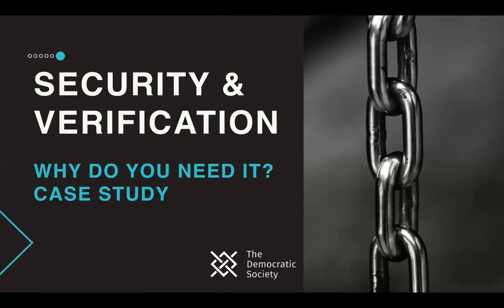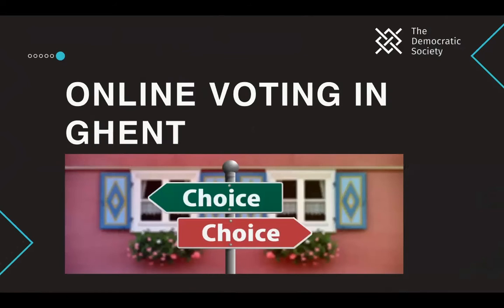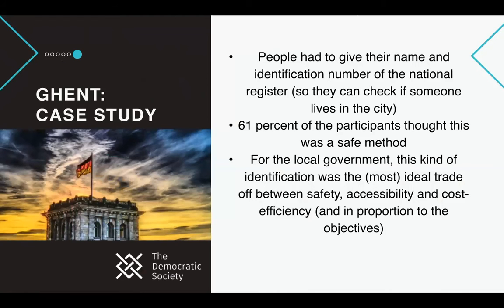Some people ask: why do we need security in the first place? Here's an example from Ghent, Belgium, where things went slightly wrong. People had to give their name and identification number from the national register so the system could check if someone lived in the city. Sixty-one percent of participants thought this was a safe method. For the local government, this was the most ideal trade-off between safety, accessibility, and cost efficiency — but there's a balance between getting people engaged online and how secure and cost-effective it is.